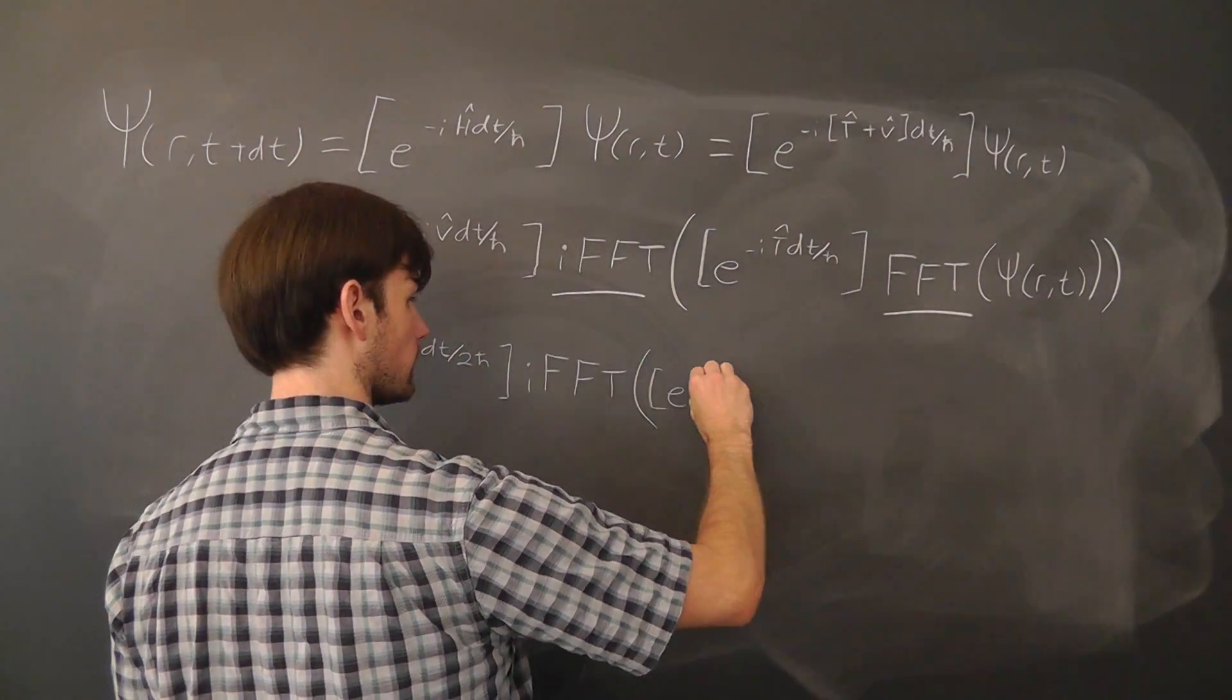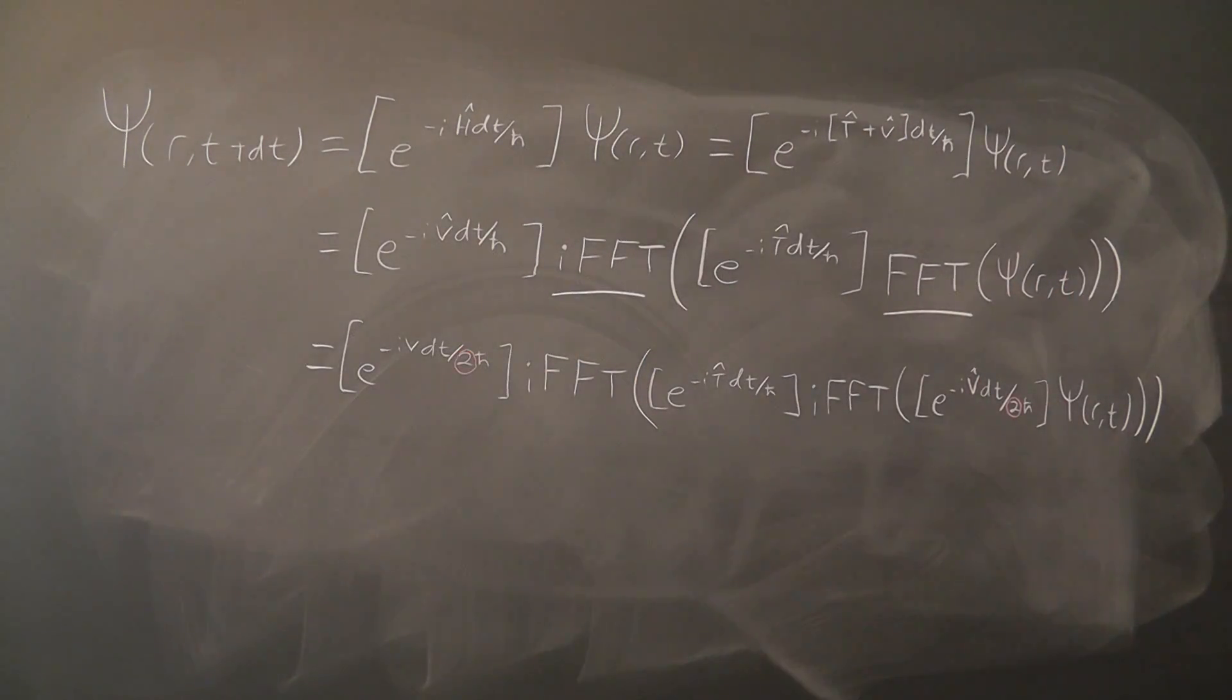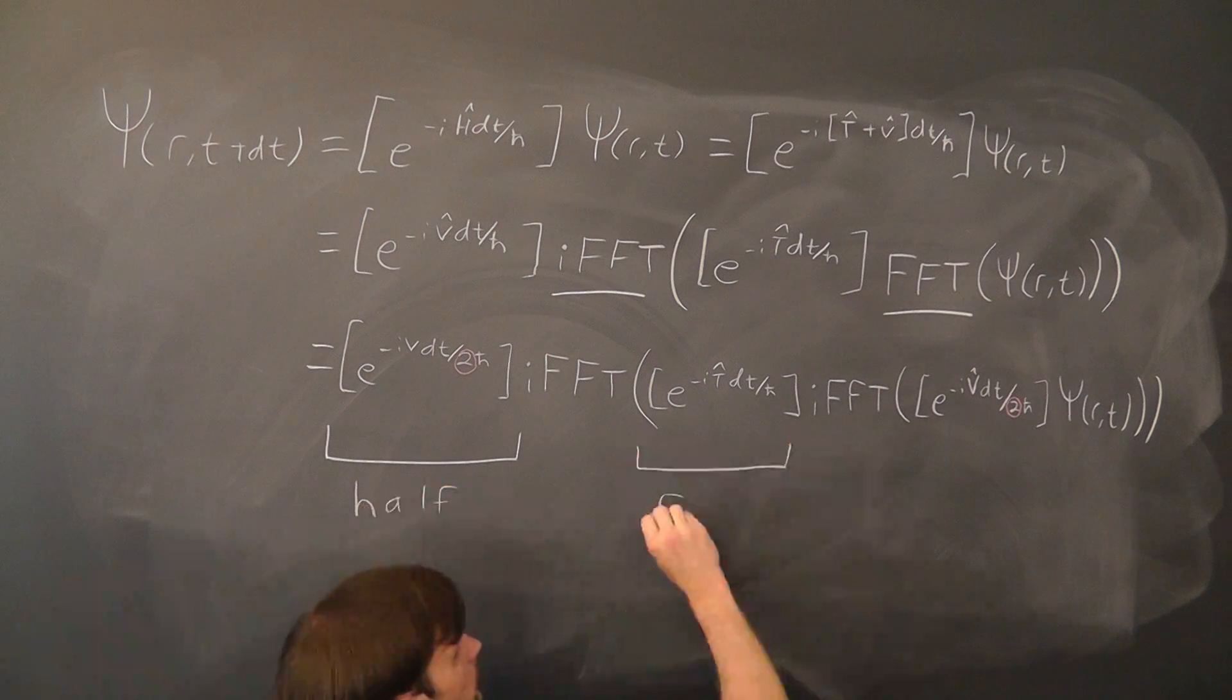So, we often instead split up the system like this, with a half step in position space, then a full step in momentum space, followed by a half step in position space again.